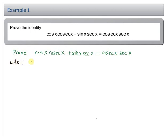With the left hand side we start with cos x csc x plus sin x sec x and we try to produce the expression on the right hand side that is csc x sec x. To simplify this, csc x is 1 over sin x and sec x is 1 over cos x.